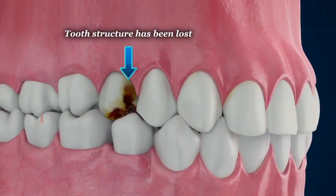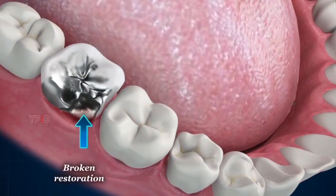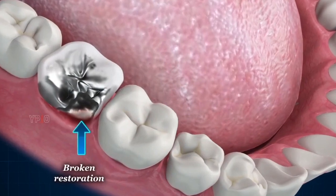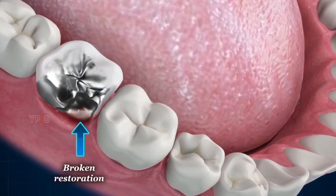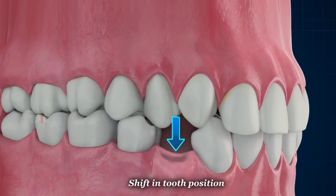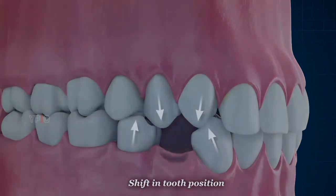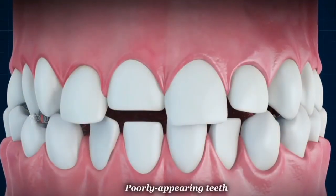There are various kinds of dental restorations made up of different types of material. Some indications for dental restorations include: tooth structure has been lost due to decay or damage, or a previously placed restoration has deteriorated or broken.